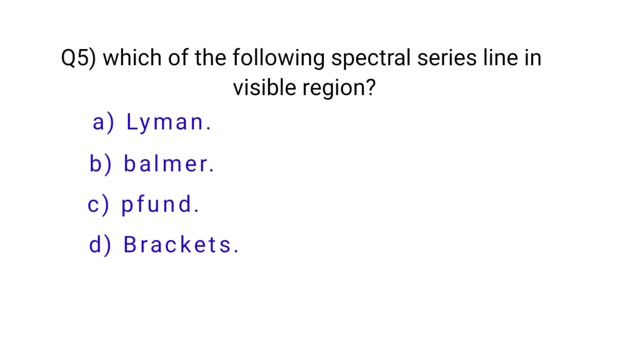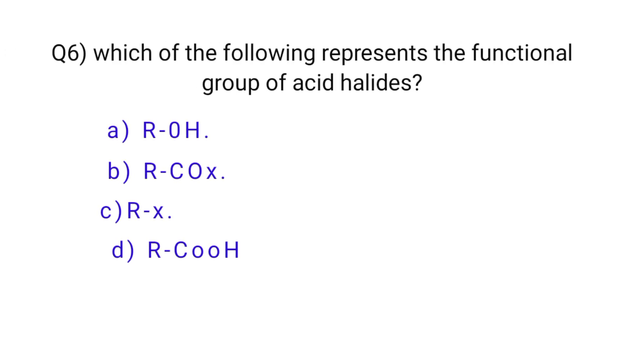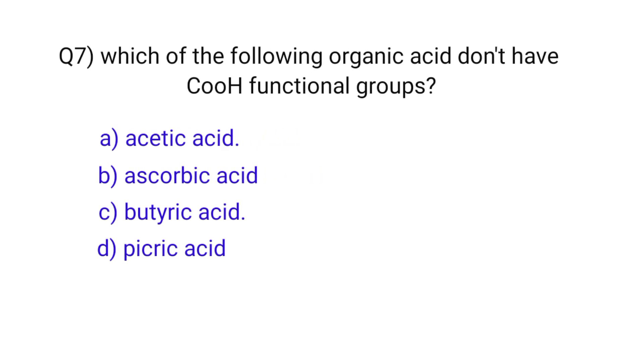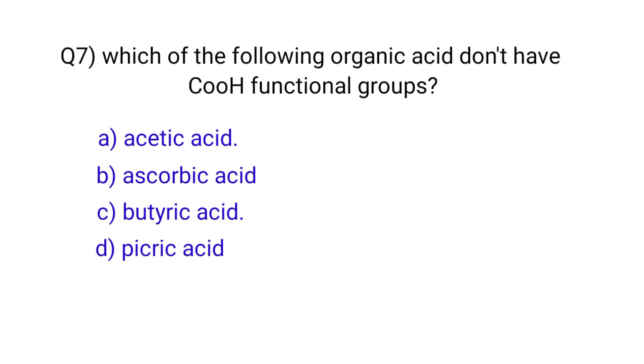Question number five: which of the following spectral series lies in the visible region? The correct option is B, Balmer series. Question number six: which of the following represents the functional group of acid halides? The correct option is B, R-COX.